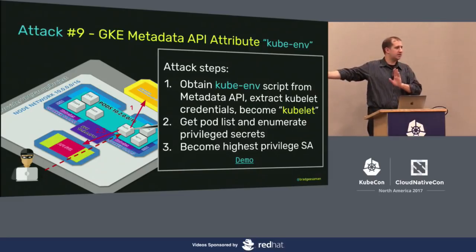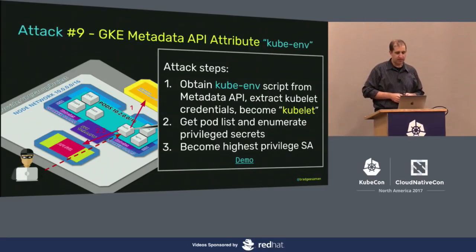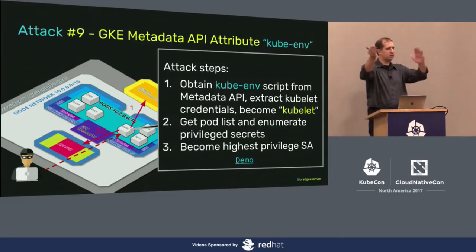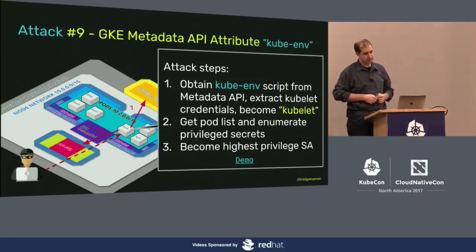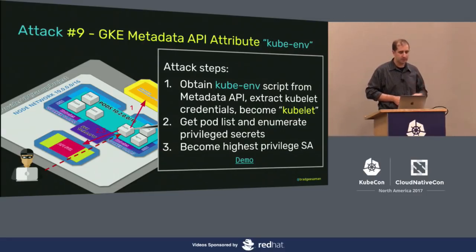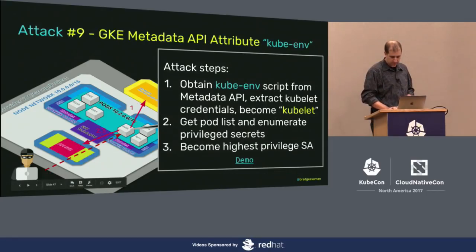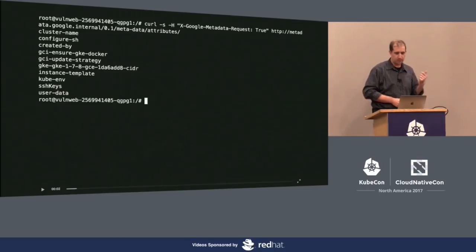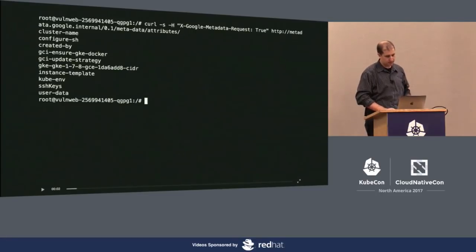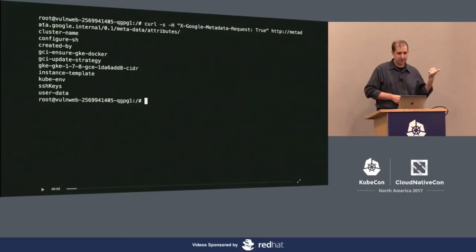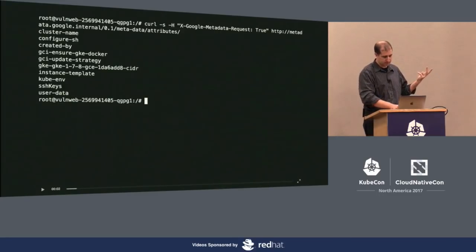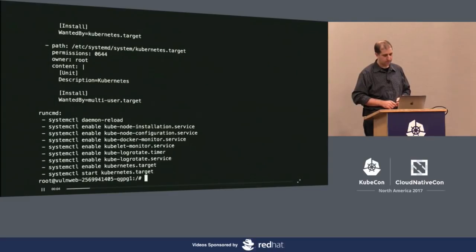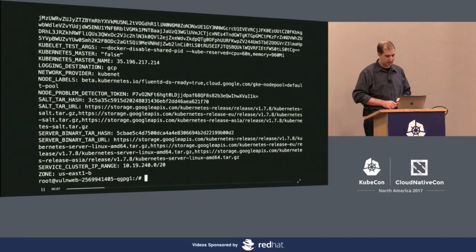Attacks nine and ten — I'm switching gears to GKE and GCE. In GKE specifically, there's an attribute called kubeENV that the kubelet uses to bootstrap itself and get its keys. That's often reachable directly. There's a metadata listing there. Part of the security feature is that you have to pass a header into Google's API to avoid server-side request forgery. configure.sh looks interesting, kubeENV looks interesting, and user-data looks interesting. We know the release, where it's getting things from, the IPs of the master, and the kubelet's key, cert, and CA info.